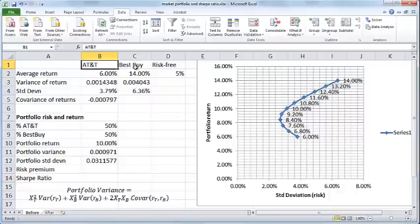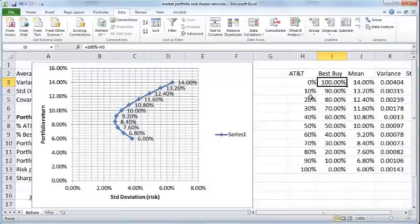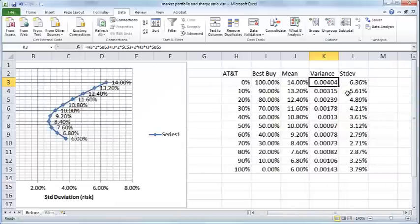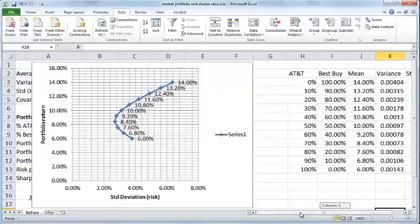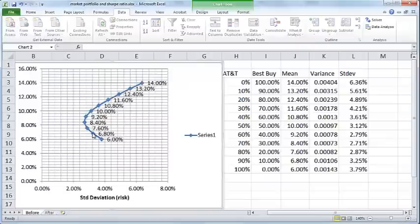The stocks in this portfolio are AT&T and Best Buy. These are their average returns and these are their average variances, their standard deviations and their covariance. Given this information, if you combine AT&T and Best Buy in various combinations, you get various combined average returns and you get combined variances and their standard deviations. And if you plot that, you get a curve such as this, which is efficient frontier curve.